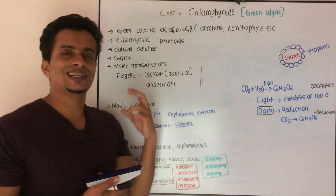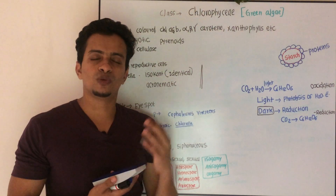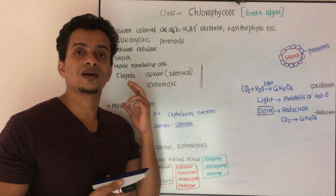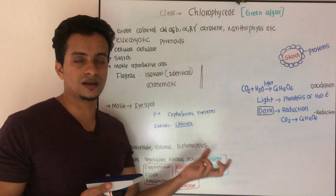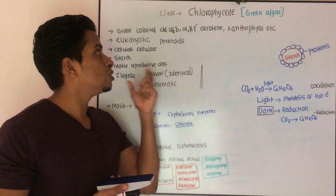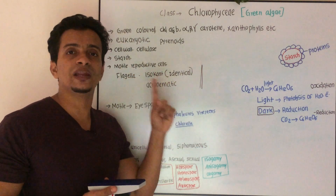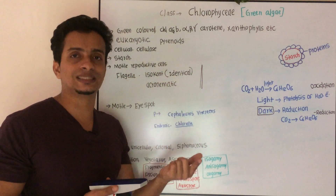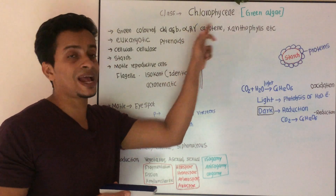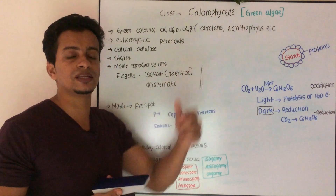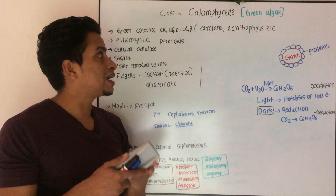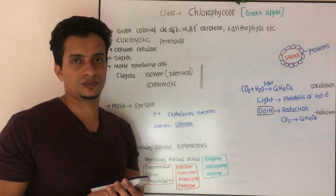Let's talk about Chlorophyceae general characters. First point is: their thallus is green colored and they have chlorophyll A and B as their principal photosynthetic pigments. Accessory pigments include alpha, beta, gamma carotene, xanthophyll, etc.